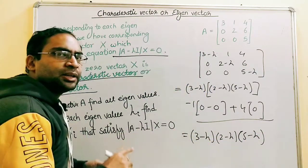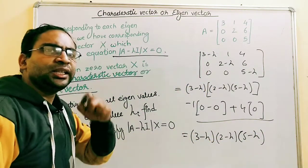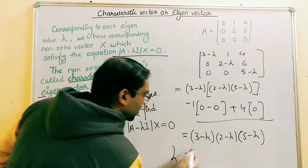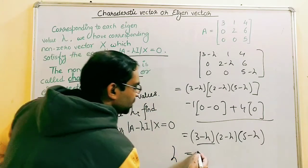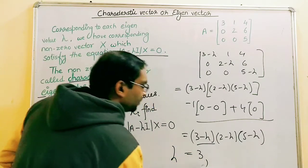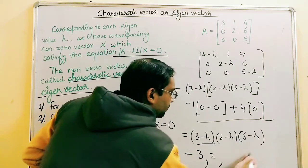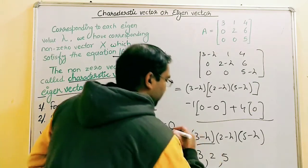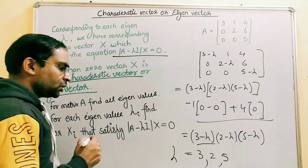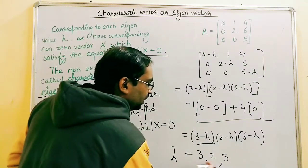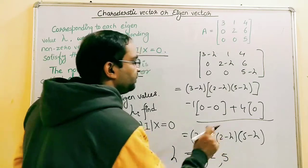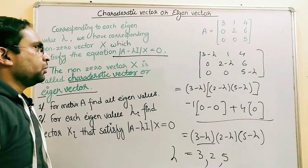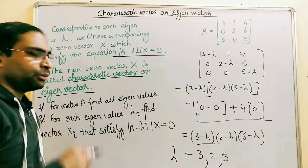From this we can see that there are three eigenvalues: lambda equals 3 from the first factor, lambda equals 2 from the second, and lambda equals 5 from the third. So we have three eigenvalues — 3, 2, and 5 — for the given matrix.